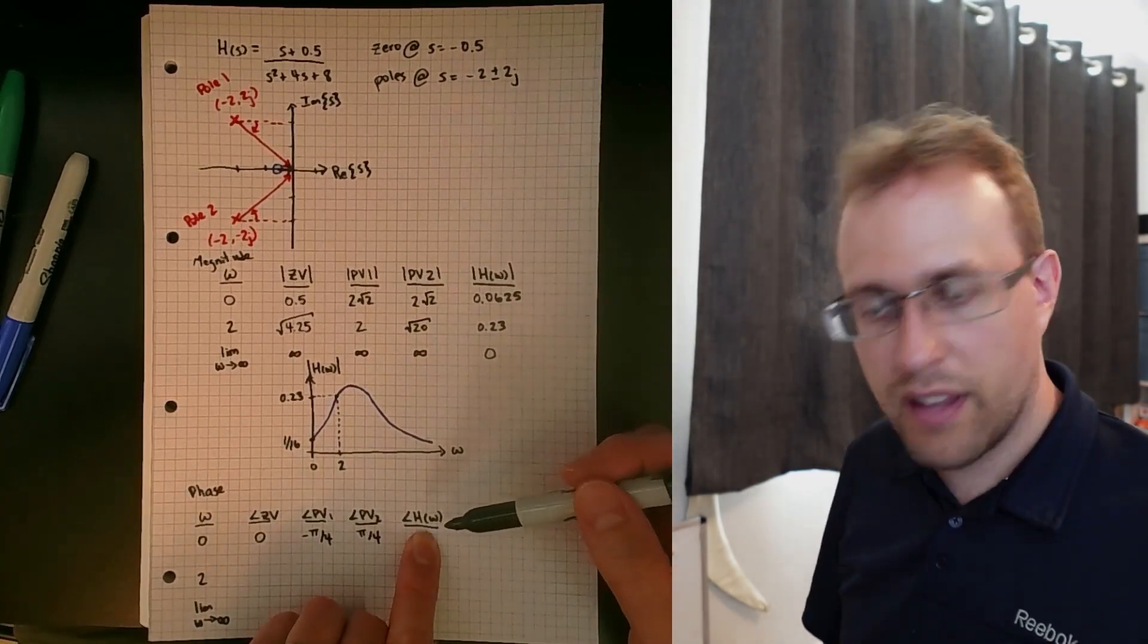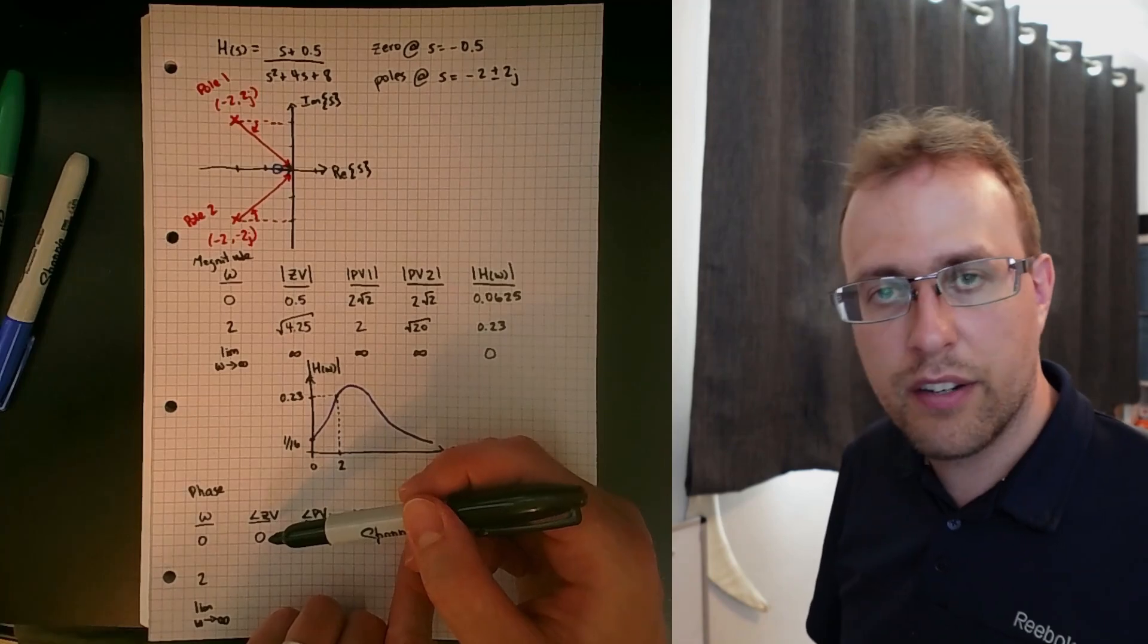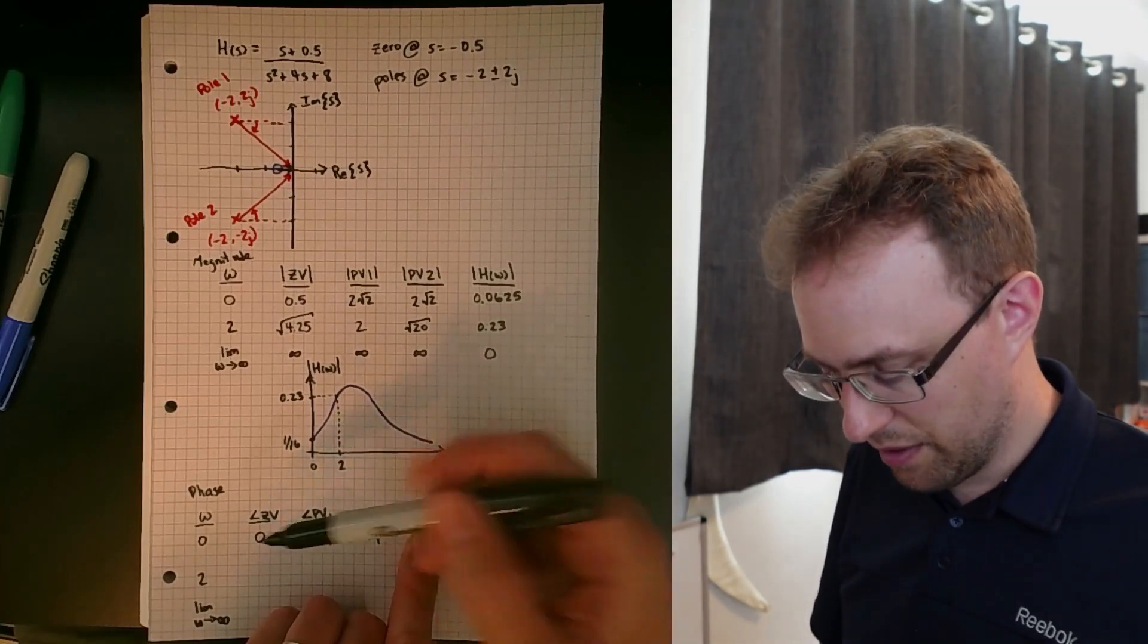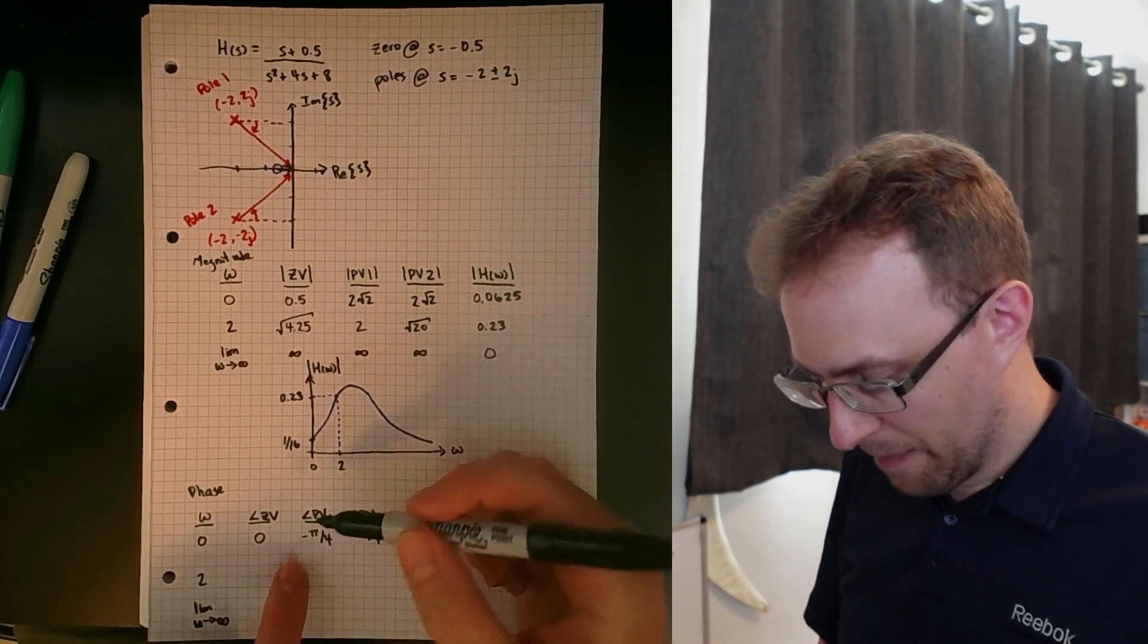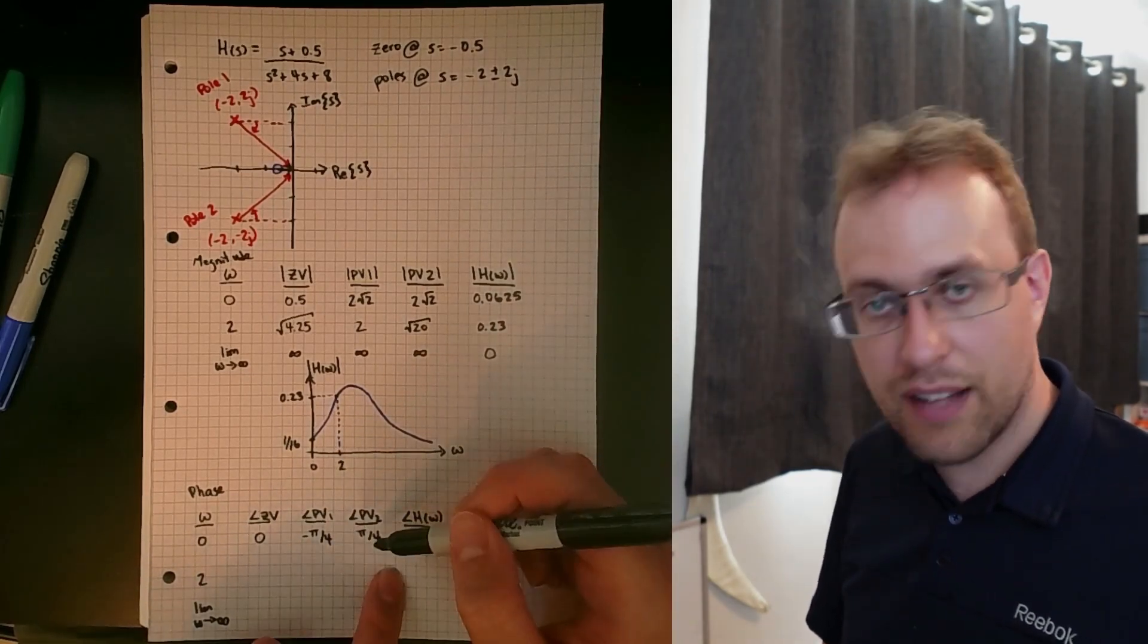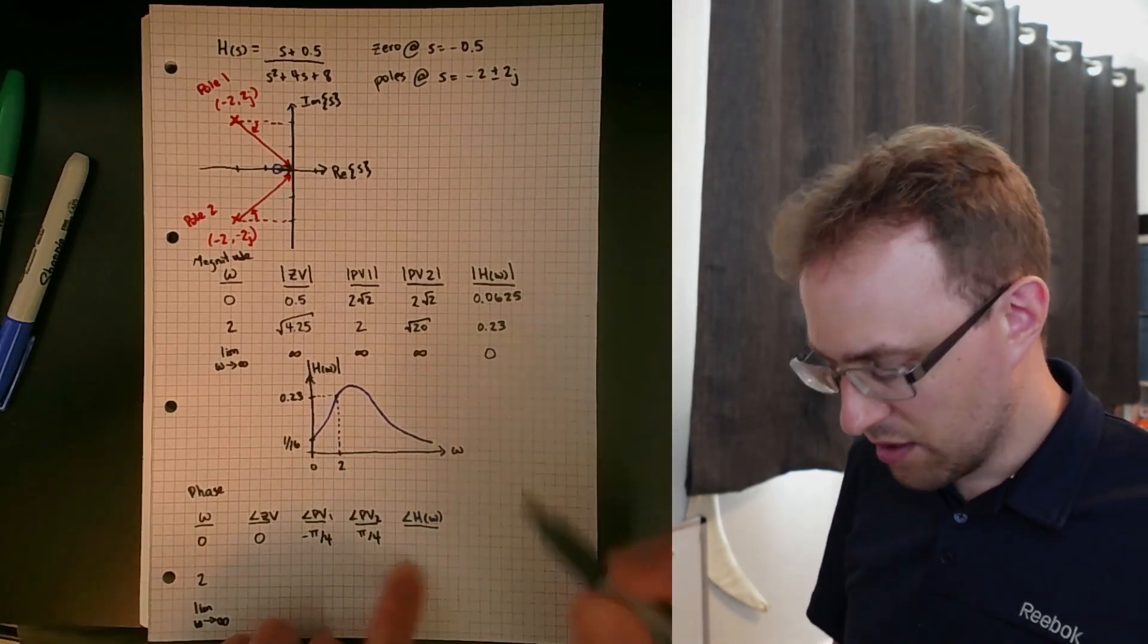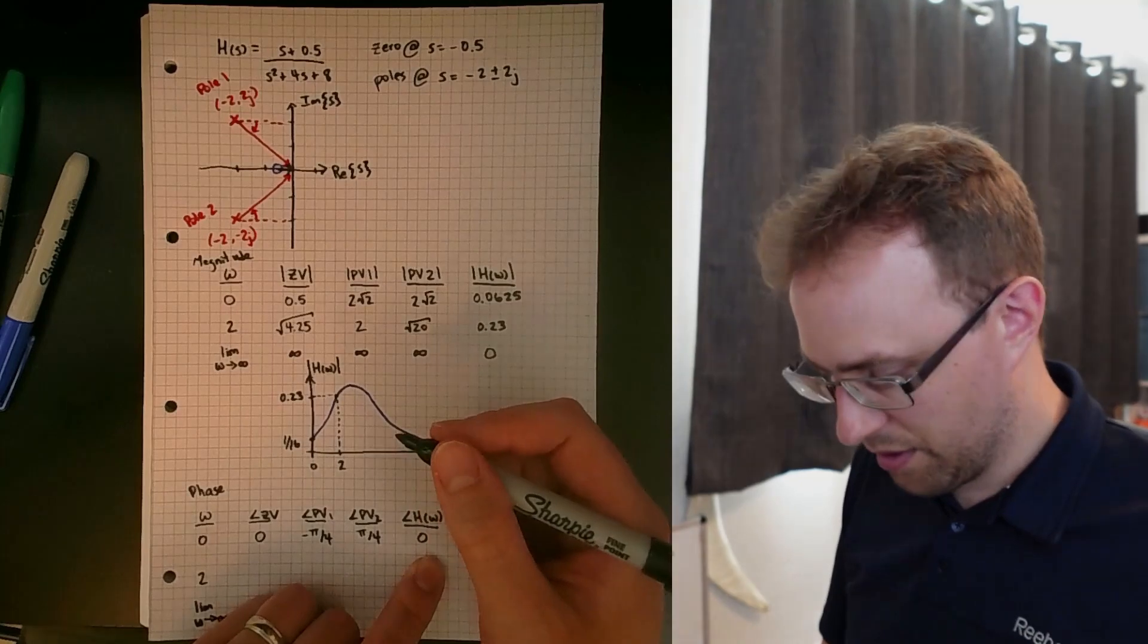By symmetry, the phase associated with this vector is going to be positive pi over 4. For the overall phase then, at this frequency of zero, we take the zero vector phases, subtract the sum of the pole vector phases. So we're subtracting minus pi over 4 plus pi over 4. These cancel each other out at this frequency, so we end up with an overall phase of zero radians.